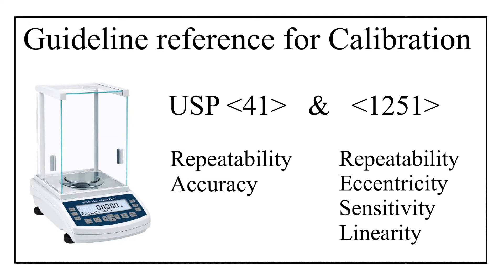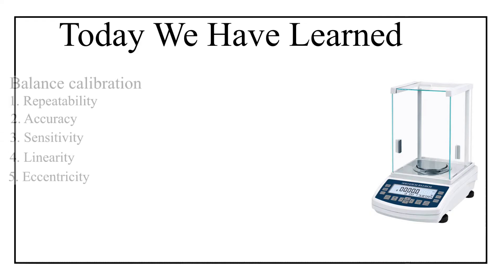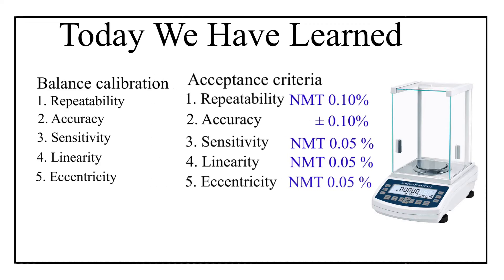Let's quickly rewind today's learnings. We learned three things about balance calibration. First, there are five calibration parameters: repeatability, accuracy, sensitivity, linearity, and eccentricity. Second, repeatability and accuracy share the same acceptance criteria of not more than 0.10%, whereas sensitivity, linearity, and eccentricity share an acceptance criteria of not more than 0.05%.